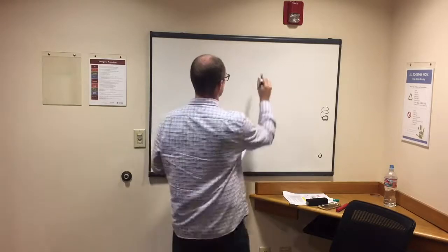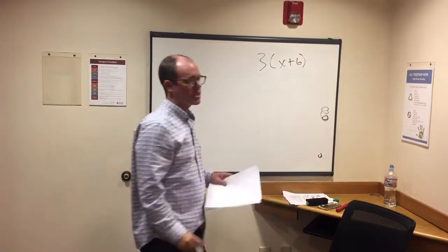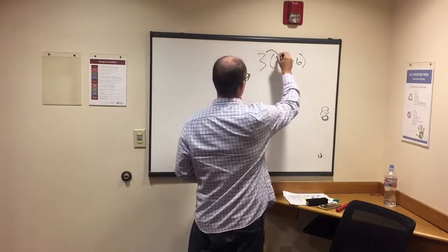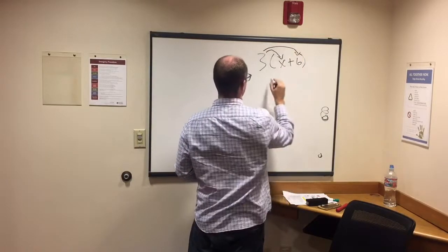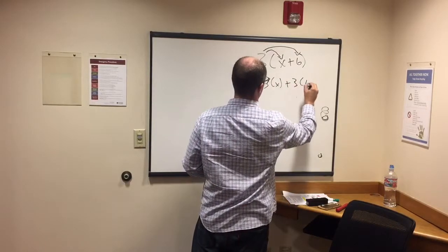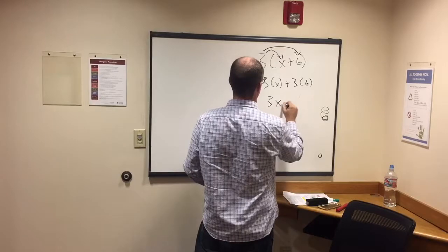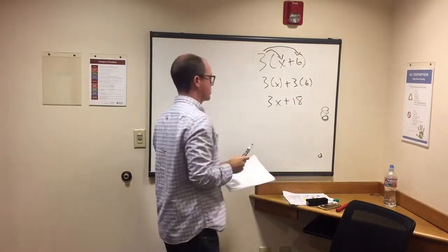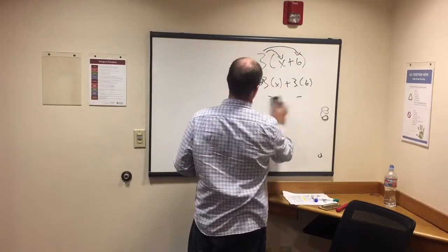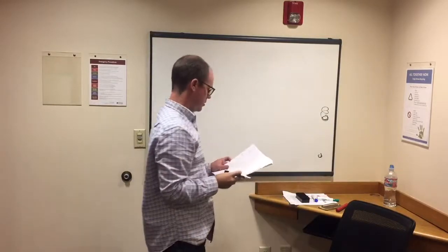Another distributive. Same thing, but with a variable instead. So we have 3 times x plus 6. And so again, same kind of thing as what we just did. We're going to multiply 3 by x plus 3 times 6. So 3 times x plus 3 times 6. And then if you multiply those together, you would get 3x plus 18. That's also distributive. Again, we're distributing that 3.